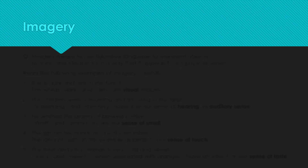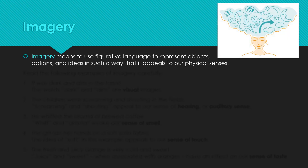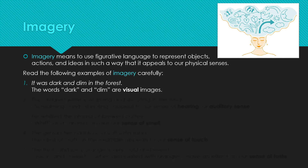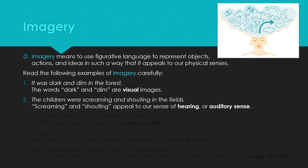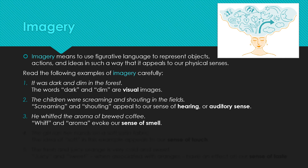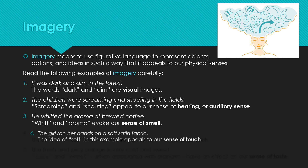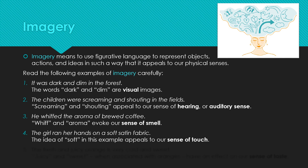The second literary element we will be covering is imagery. Imagery means to use figurative language to represent objects, actions, and ideas in such a way that it appeals to our physical five senses. Example 1: 'It was dark and dim in the forest' — dark and dim are visual images that appeal to the sense of sight. Example 2: 'The children were screaming and shouting in the fields' — screaming and shouting appeal to our sense of hearing. Example 3: 'He whiffed the aroma of brewed coffee' — whiff and aroma evoke our sense of smell. Example 4: 'The girl ran her hands on a soft satin fabric' — soft appeals to our sense of touch.